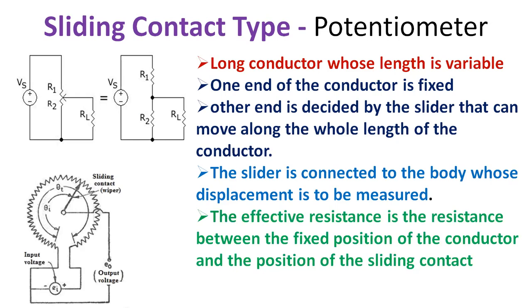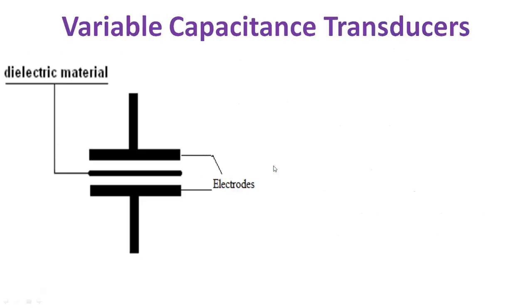One of the most popular sliding contact type of variable resistance transducers is the potentiometer. These devices can be used both for translational as well as rotational, that is angular, displacement measurement.